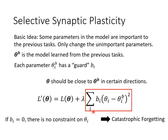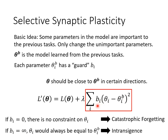If bi is very large, the learned results will be very close to θB. The model may not forget old tasks, but it cannot learn new tasks well. This situation is called intransigence.